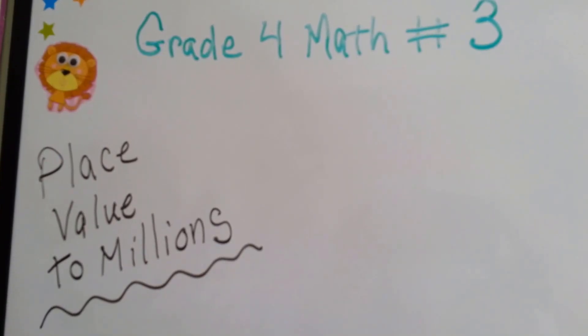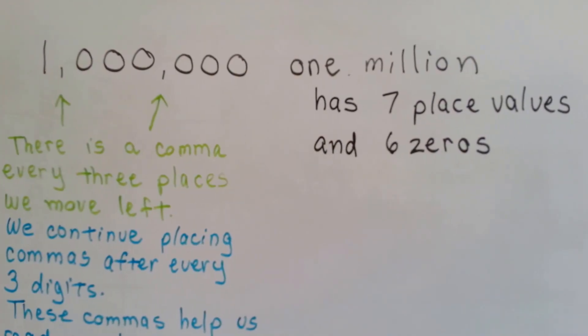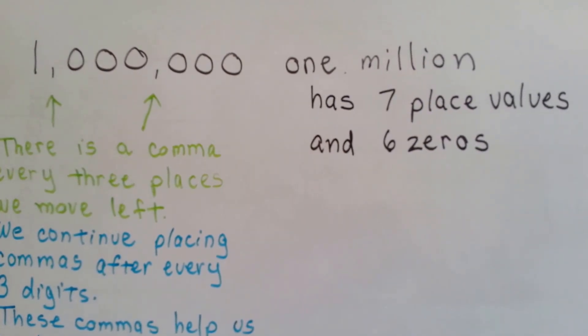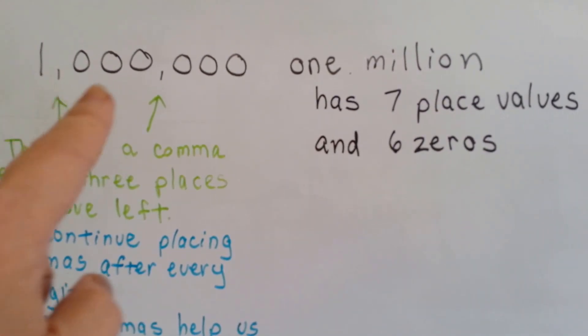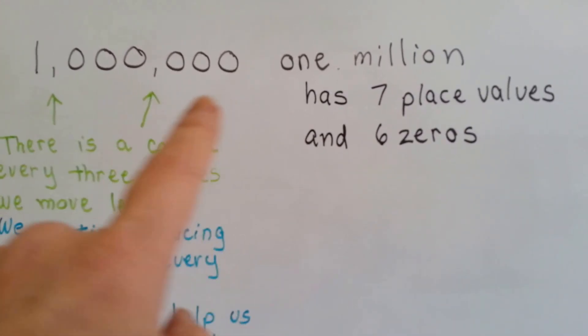Grade 4 math number 3, place value to millions. We've been talking about place values, and that's what one million looks like. It's a one with six zeros. There are seven place values and six zeros.